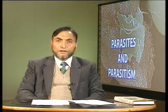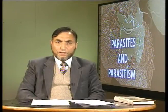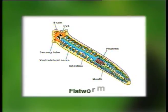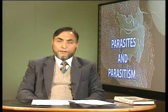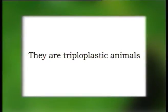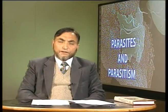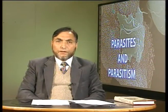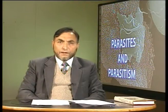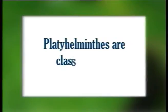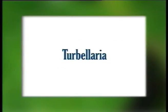The phylum Platyhelminthes includes animals with a flattened body — dorsoventrally flattened — with a mouth, digestive system, reproductive system, excretory system, and all other systems. Platyhelminthes are triploblastic animals and are the first group to show an organ system. They are classified into three classes: Turbellaria, Trematoda, and Cestoda.